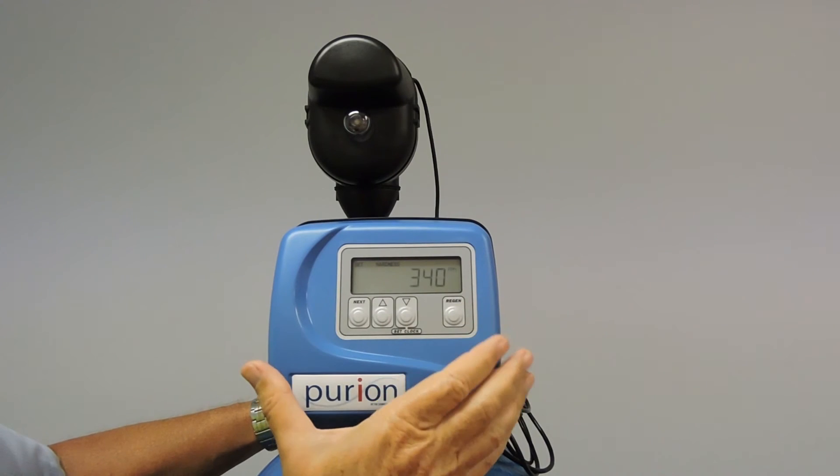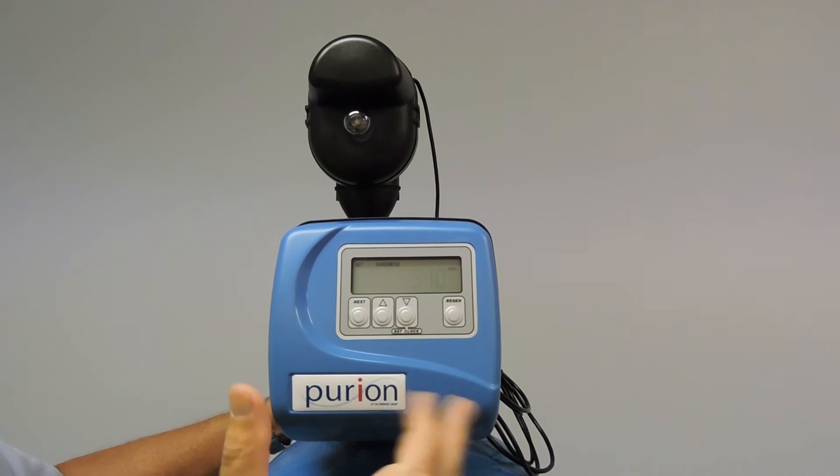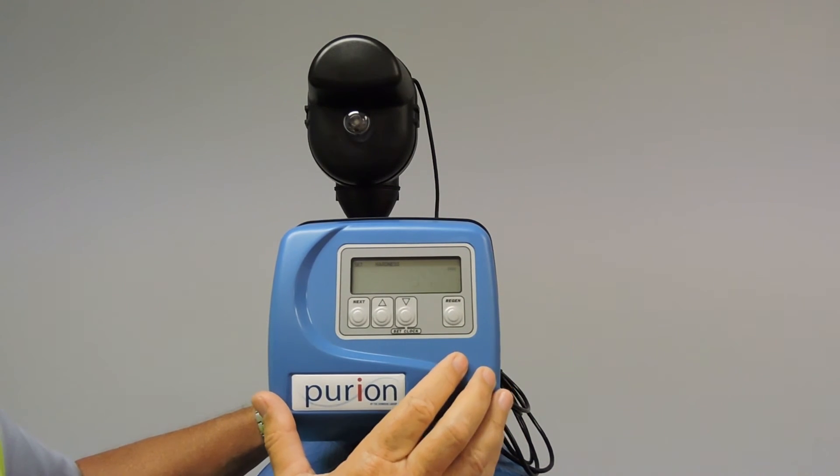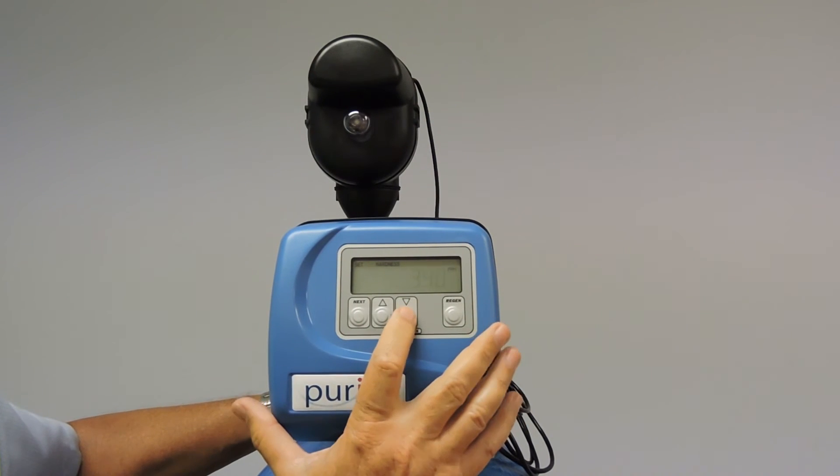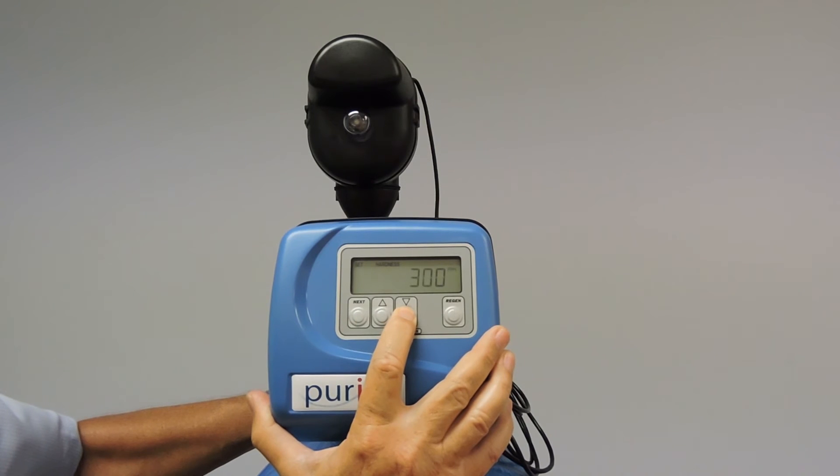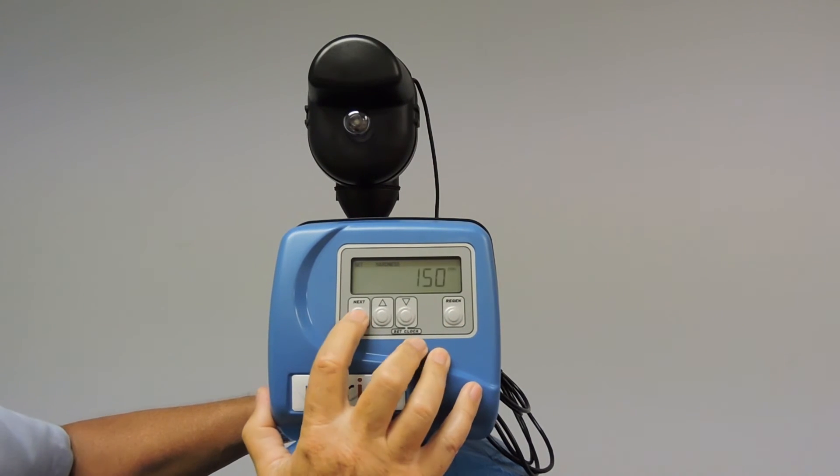The first one is hardness. And this is where we select the water hardness that we are going to be using. In our case we'll just use a generic figure that we use of 150. So I'm going to scroll down to change it to 150 parts per million. And accept it.